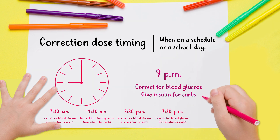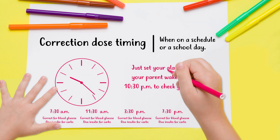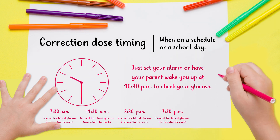Can you correct for the high glucose? No, because it hasn't been three hours since the last dose of fast-acting insulin. You don't need to stay up — just set your alarm or have your parent wake you up at 10:30 p.m.